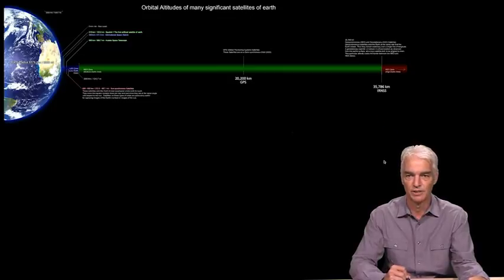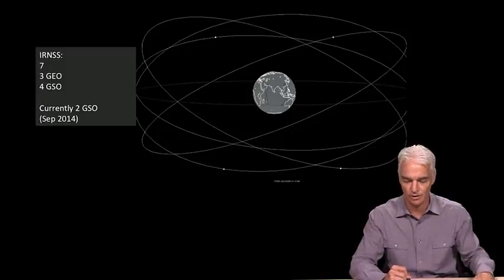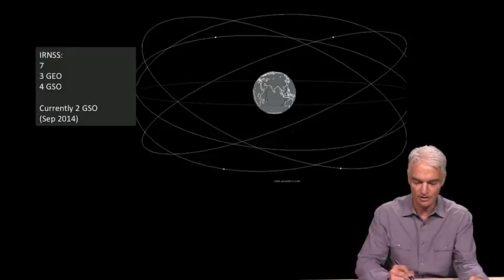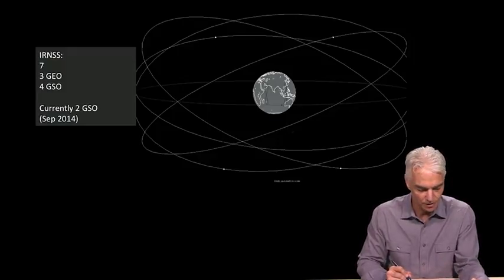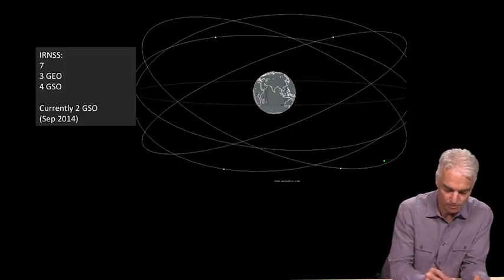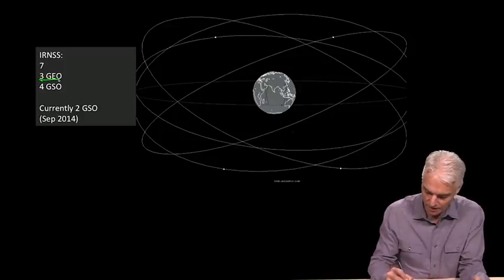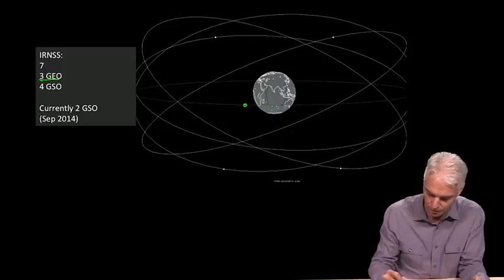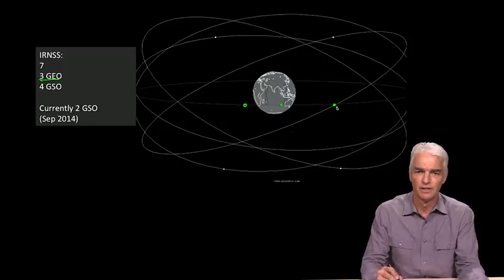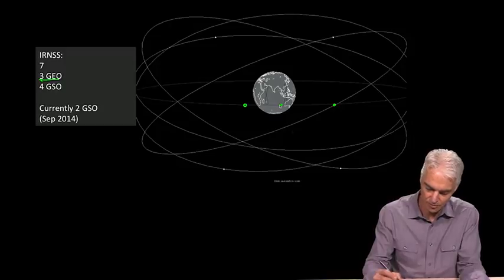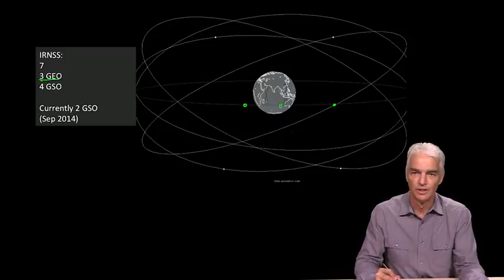And if we go and look at what the orbits look like, you'll see the plan is to have three geos, and they will be in equatorial orbit, of course, so that they will be hovering at similar longitude to India.